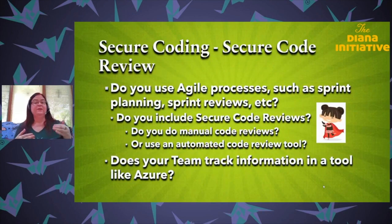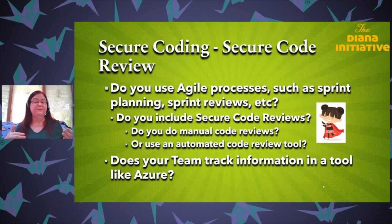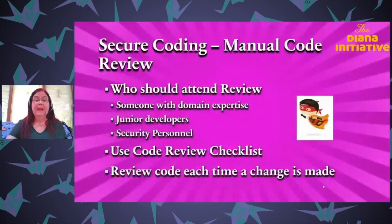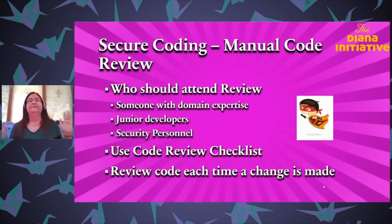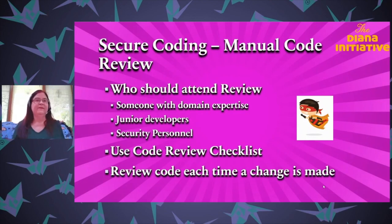For reviews — when you get to code reviews in agile processes, sprint planning, and sprint reviews — do you include secure coding reviews such as manual code reviews or automated code reviews, and do you track that information in a tool like Azure? A manual code review in this context is not going through all the code finding every flaw — it means just reviewing the code that was changed at that time, for instance when you don't have Azure set up for automated reviews.